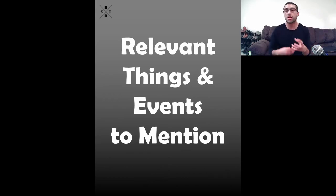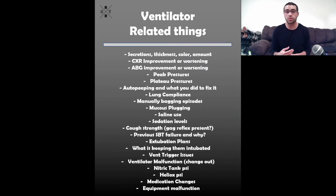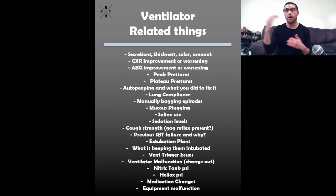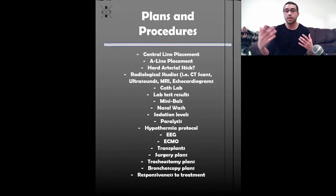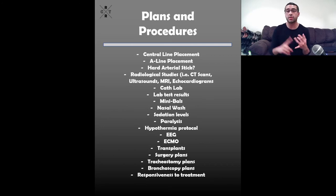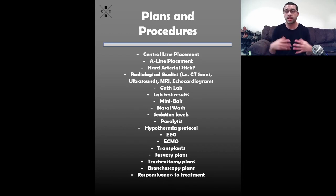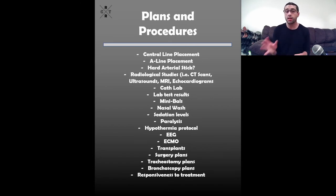Here are more concrete things to mention in report: secretions, chest x-rays, ABGs, peak pressures, plateau pressures — are they reaching that high plateau pressure of 30? Are they at risk for barotrauma? Were they auto-PEEPing? Were they hyperinflated? Was lung compliance getting better or worse? Did you have to manually bag them? Also mention plans and procedures: are they going to get a central line, a trach, ECMO, transplant, bedside dialysis or CRRT? Lab test results, mini-BALs, and how they're responding to therapeutic interventions.